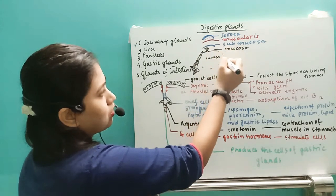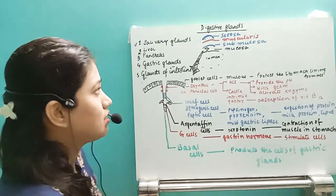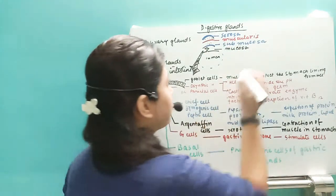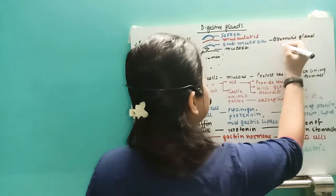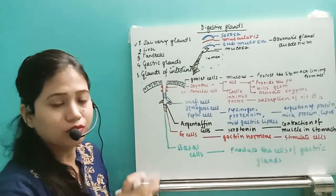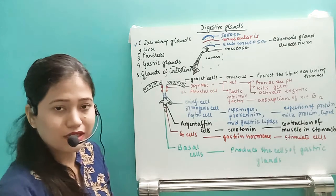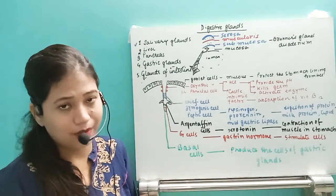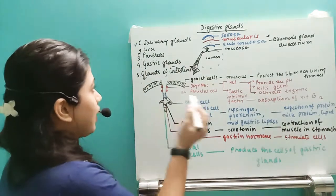Almost all digestive glands are present in the mucosa layer, but there is one exception: the submucosa normally does not have glands. However, there is one digestive gland present in the submucosa — that is known as Brunner's gland. Brunner's gland is located in the duodenum region. This is a very important point to remember.